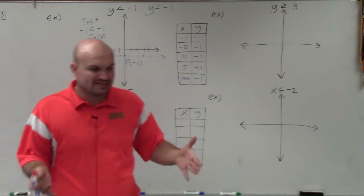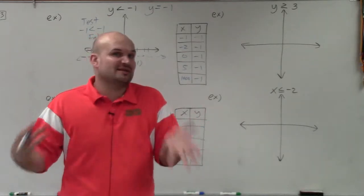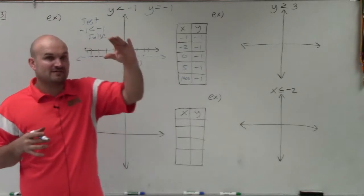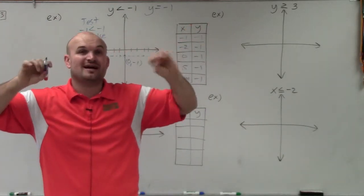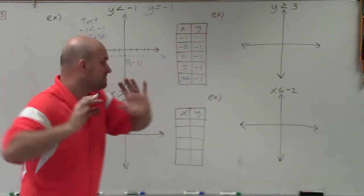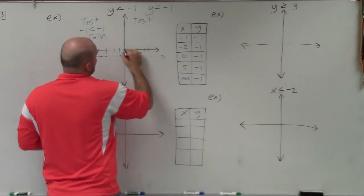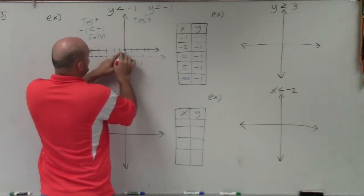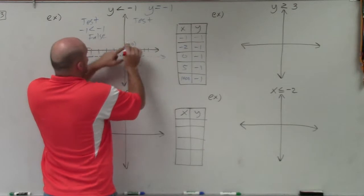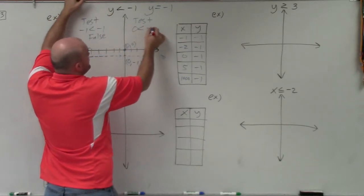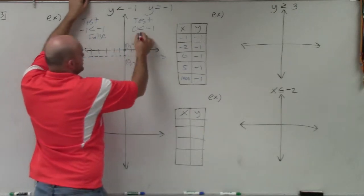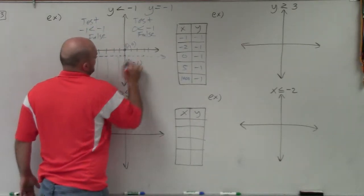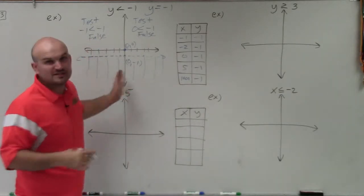Now we want all values of y that are less than negative 1. Use another test point to determine which side to shade. If points above the line are false, all points above are false. The best test point is (0, 0), as long as the boundary line doesn't pass through it. Plugging in: 0 is less than negative 1 — is that true? No, that's false. Since all points above are false, all points below are going to be true, so I shade below the line.